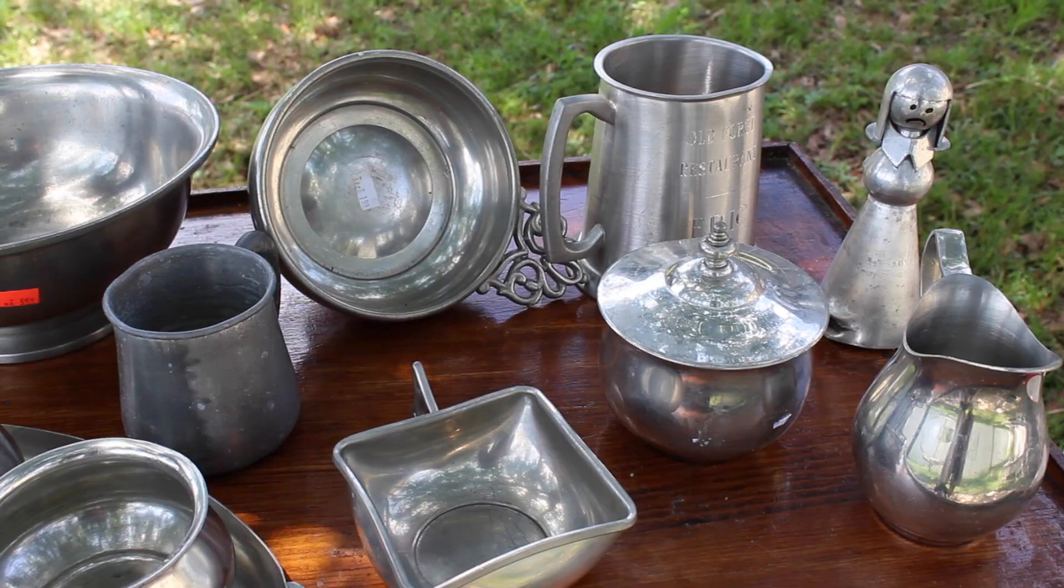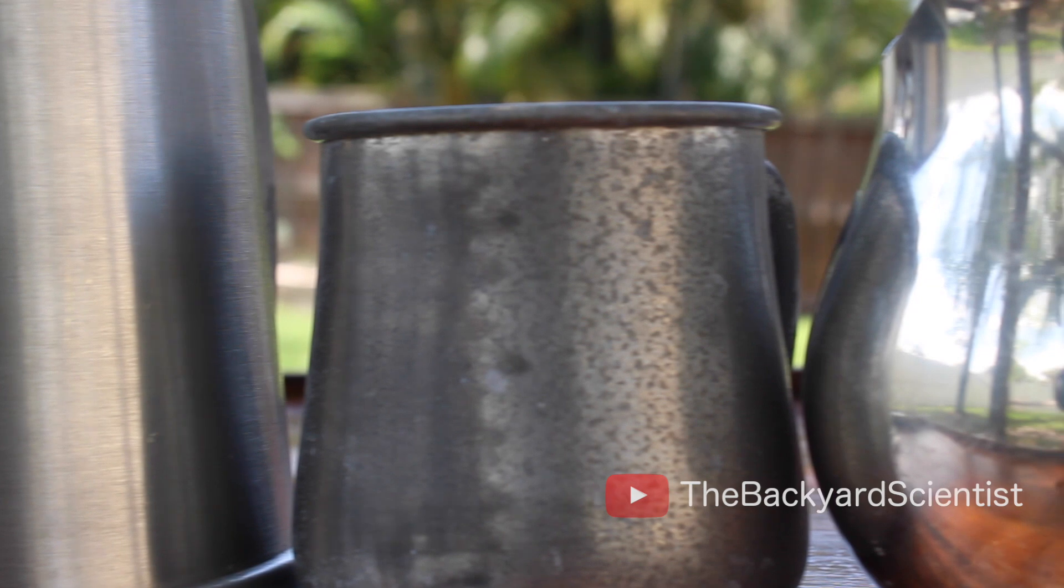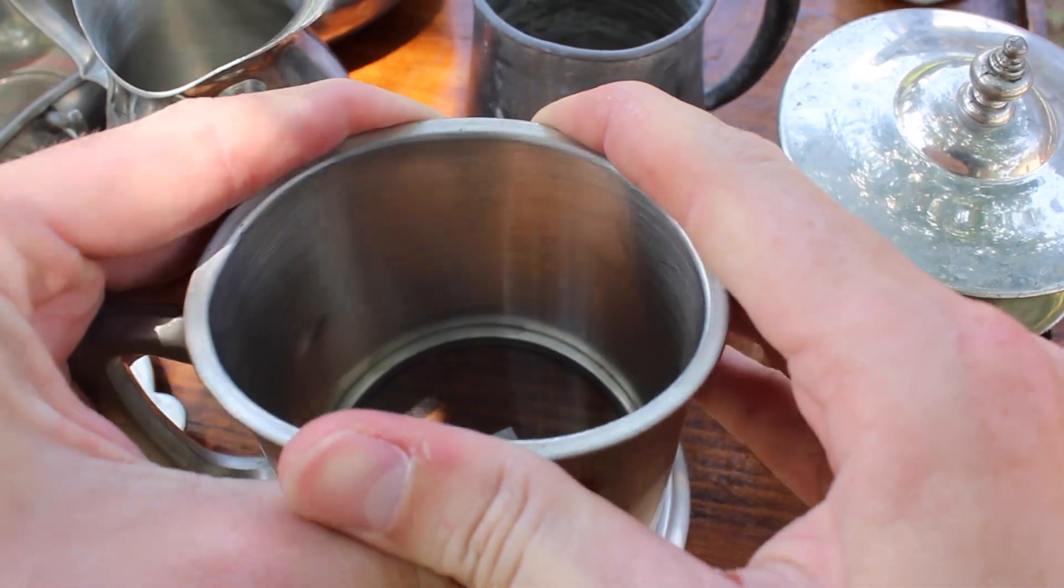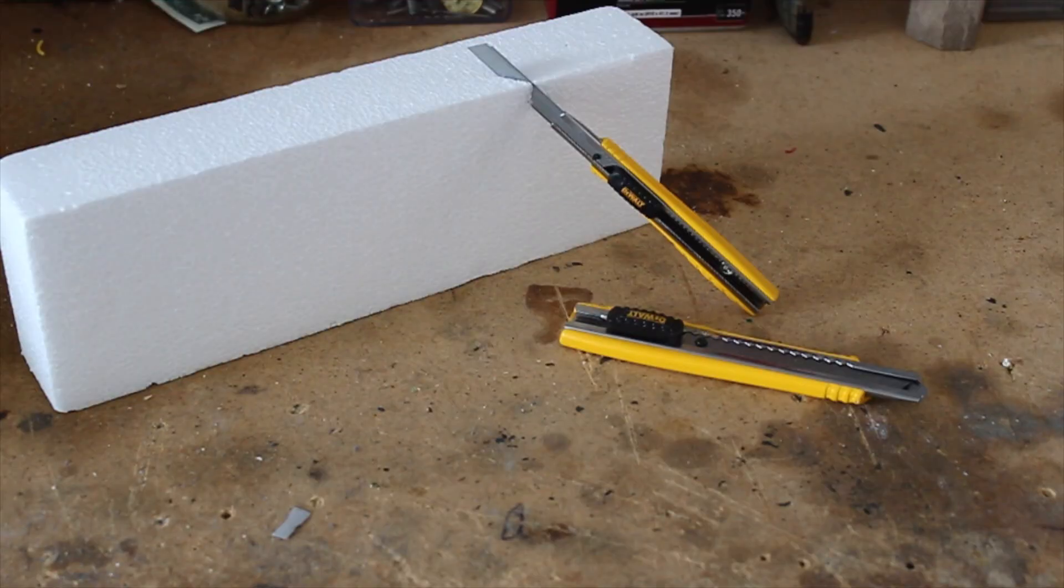Pewter is an alloy consisting mostly of tin with a little bit of antimony and copper. If you try to find pewter in a thrift store it usually comes brushed, dull, or with a shiny finish. Another way to tell it apart from steel or aluminum is how soft it is. You can bend it with your fingers.